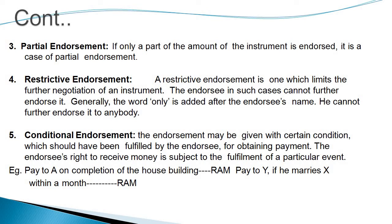Next is restrictive endorsement. A restrictive endorsement is one which limits the further negotiation of the instrument. The endorsee in such cases cannot further endorse it. Generally, the word 'only' is added after the endorsee's name. The endorsement contains certain terms making it restrictive — it restricts the further negotiation of the instrument. This kind of restriction put by the endorser on the endorsee is called restrictive endorsement.